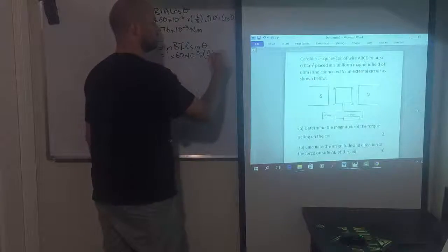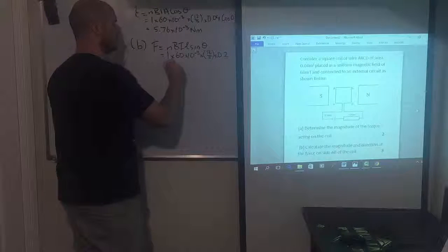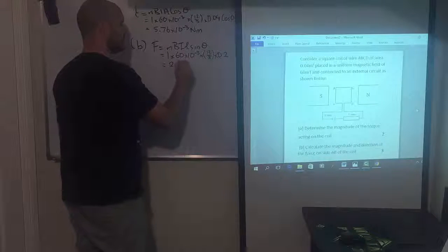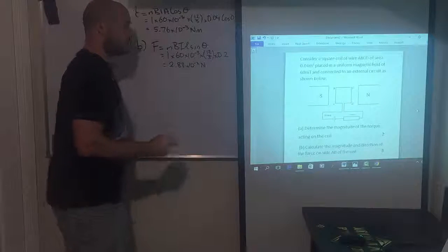So L is 0.2 and then times sine 90. Minus 10 to the minus 2 newtons.